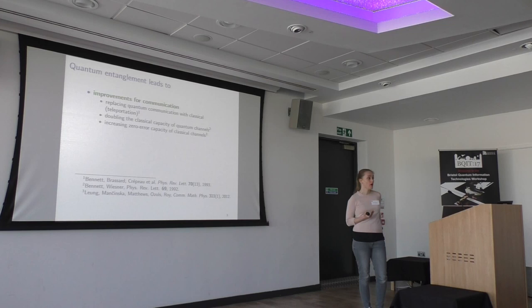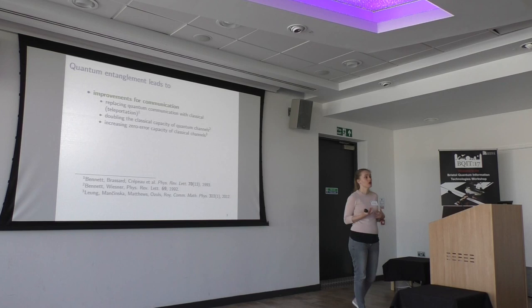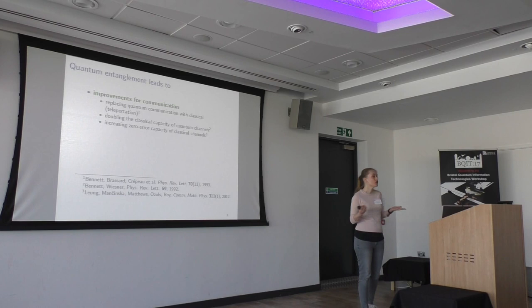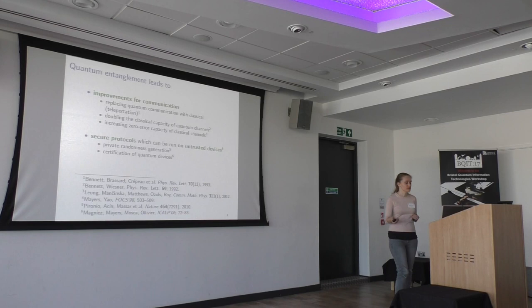Here Alice is looking to send some information over to Bob, and this information is classical. She has a classical channel available to her, but this classical channel is noisy, and she would like to encode her information so that they both can decode with zero chance of error. What we see here is that quantum entanglement lets you either use your channels more efficiently, or it lets you replace some kind of more expensive communication with a cheaper one.